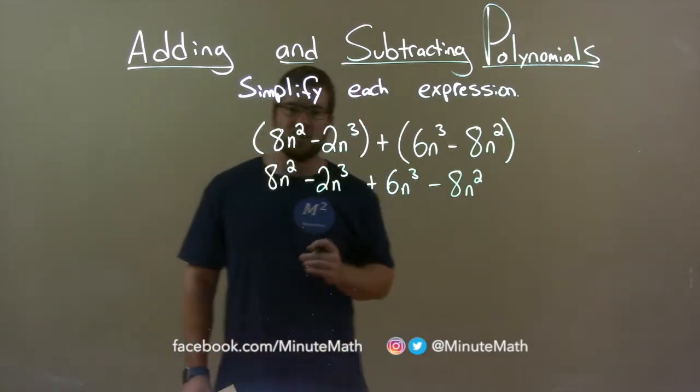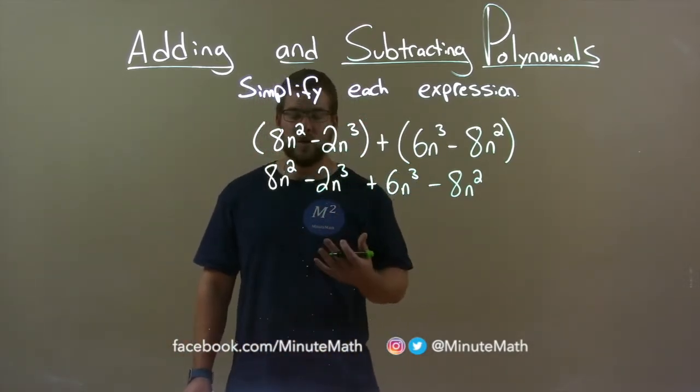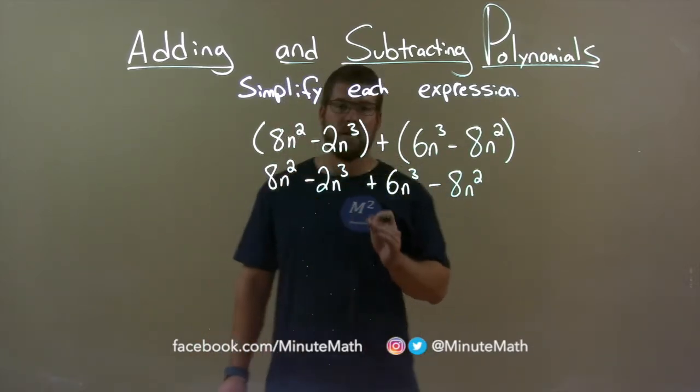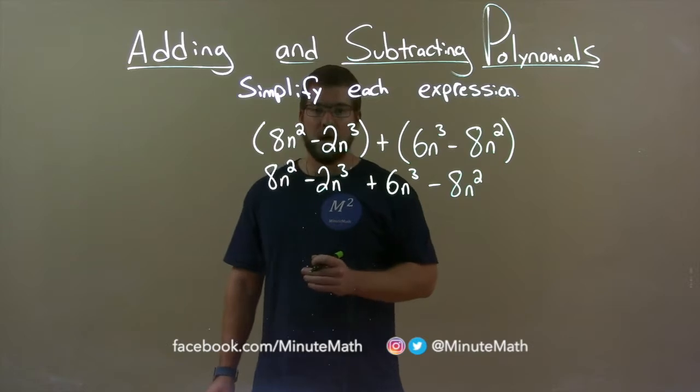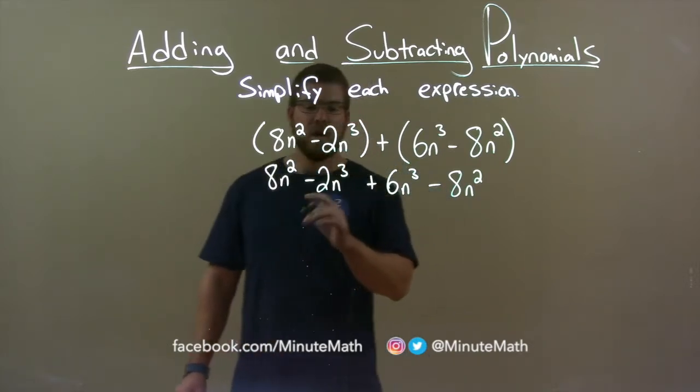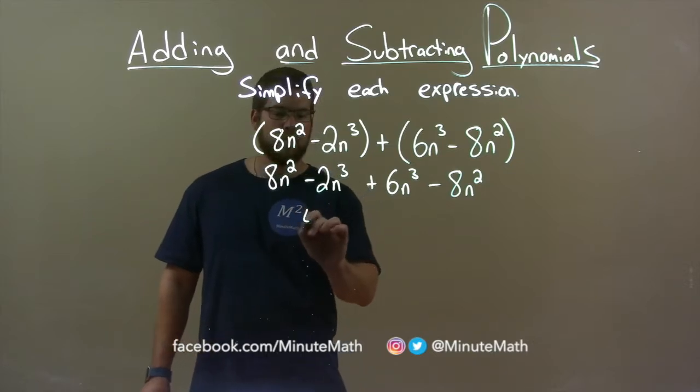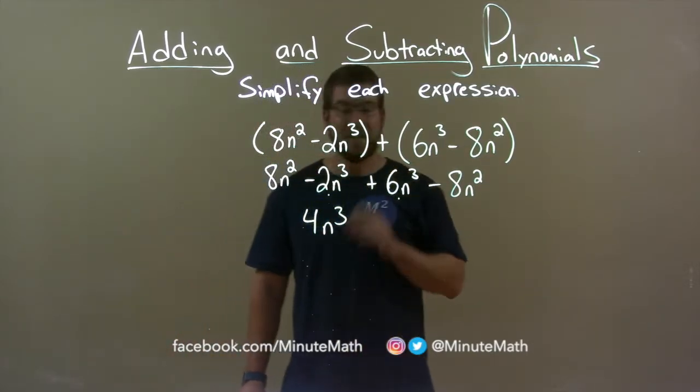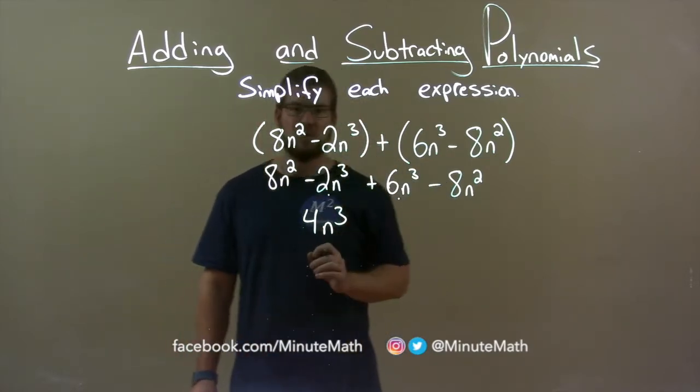Now I want to combine my like terms. I start with the highest degree though. I have a minus 2n to the third and a positive 6n to the third. The third power is my highest degree. Minus 2n to the third plus 6n to the third. Look at the coefficients as a 4n to the third. Now I put two dots underneath these two to show that I've used them.